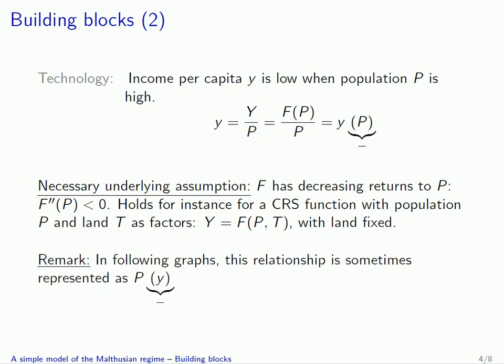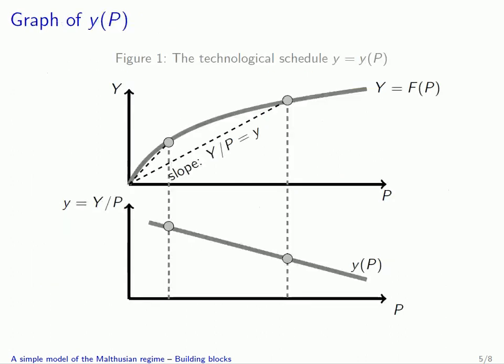One thing which is important when we solve for the model graphically is that most of the time we will represent this decreasing relationship between small y and big p — not as y as a function of p, but as p as a function of y. A way to see graphically the link between a concave production function and the fact that small y is a decreasing function of population is displayed on this graph.